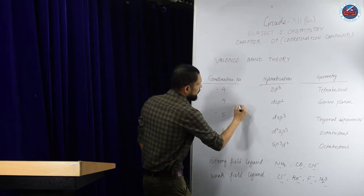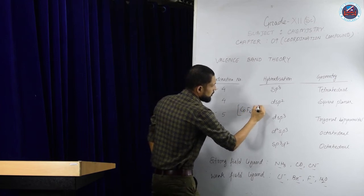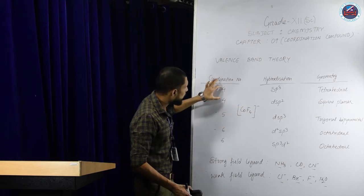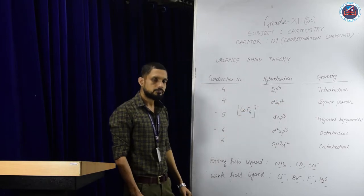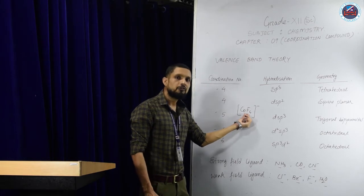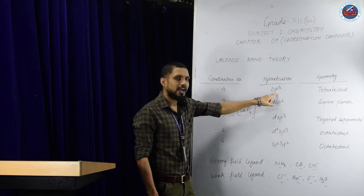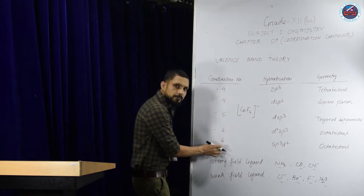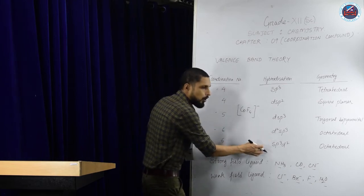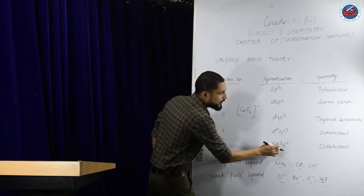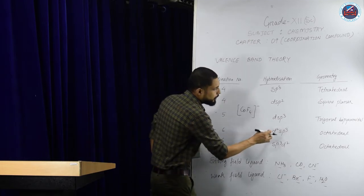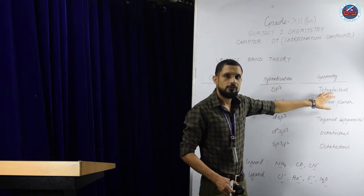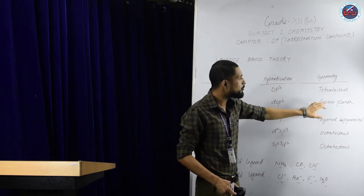Let us take the example of [CoF₄]²⁻. The coordination number of this compound is 4. With coordination number 4, there are two types of hybridization possible: SP3 or DSP2. The ligand here is a weak-field ligand, so we will use SP3. If it is a strong-field ligand, we will use DSP2. If the hybridization used is SP3, the geometry will be square planar.